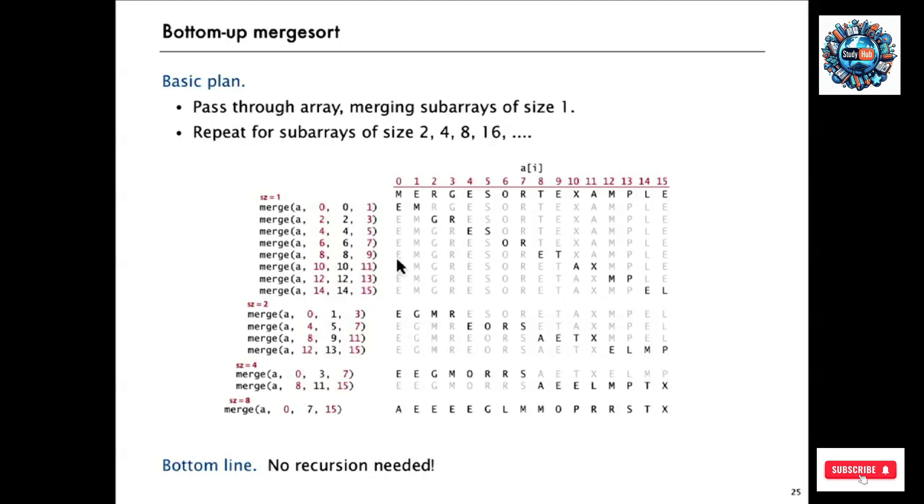Then in another pass through, we can take the EM and the GR and merge them together to make EGMR. And the ES and the OR, merge those together to make EORS and so forth. And we have four subarrays of size 4. One more pass makes two subarrays of size 8, and then the last pass is just a sorted array. The bottom line is a sequence of passes through the whole array and there's no recursion needed at all.